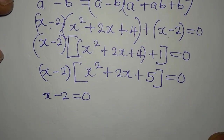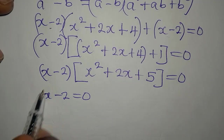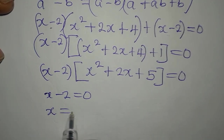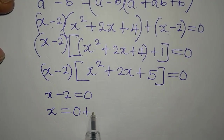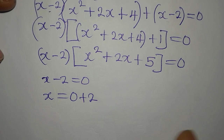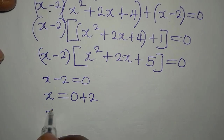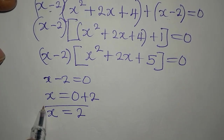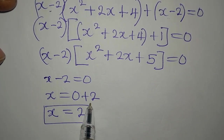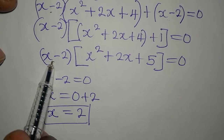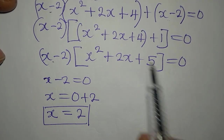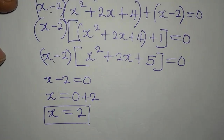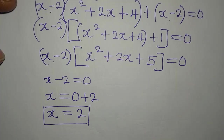So either x minus 2 equals 0 or x squared plus 2x plus 5 equals 0. From x minus 2 equals 0, we get x equals 2. That is our first solution.